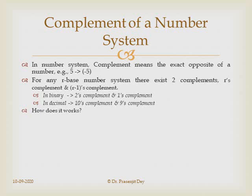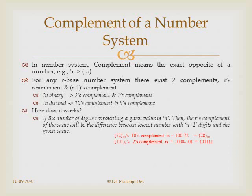If the number of digits representing a given value is n, then the R's complement of the value will be the difference between the lowest number with n+1 digits and the given value. For example, 72 is a 2-digit decimal number. The 3-digit lowest number is 100, so 100 − 72 = 28, which is the 10's complement of 72. For binary, 101 is a 3-bit number; the 4-bit lowest number is 1000, and 1000 − 101 = 011, which is the 2's complement of 101.